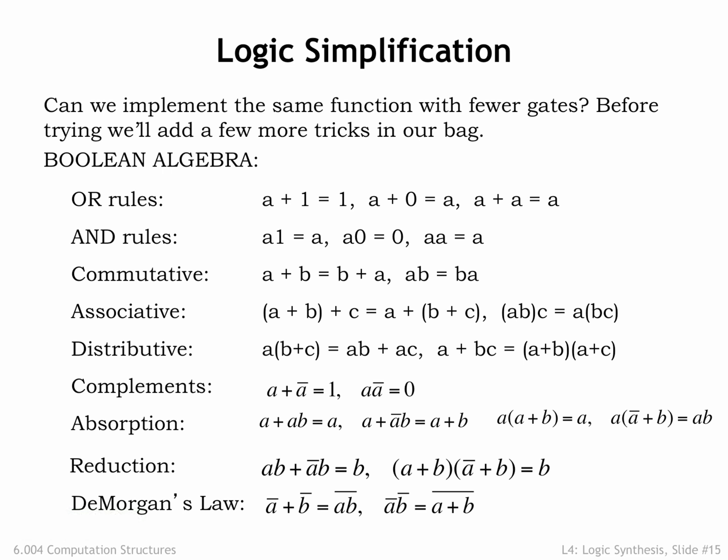Boolean algebra has many identities that can be used to transform an expression into an equivalent, and hopefully smaller, expression. The reduction identity in particular offers a transformation that simplifies an expression involving two variables and four operations into a single variable and no operations.